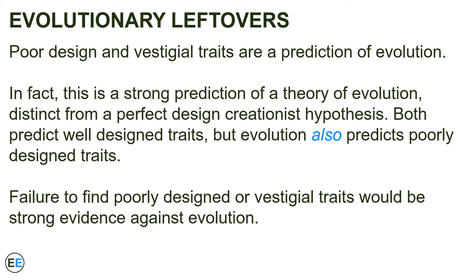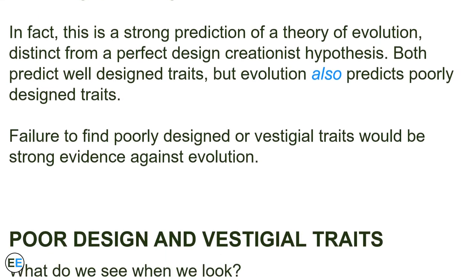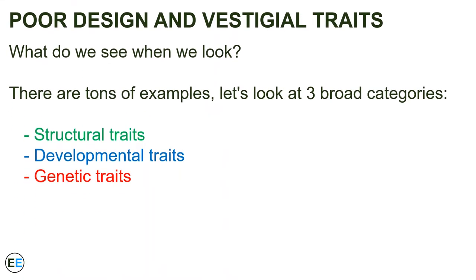The failure to find at least some poorly designed or vestigial traits would actually be strong evidence against evolution. So what do we see when we look for poor design and vestigial traits? It turns out there are tons of examples, and we'll look at a few in each of three broad categories: poor design or vestigial traits in structural traits, developmental traits, and genetic traits.